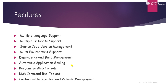Now we'll discuss the different features of OpenShift. The first feature is multi-language support as well as database support. It also supports source code version management and multi-environment support. Red Hat OpenShift enables any application created with it to run anywhere that Docker containers are supported. It also resolves dependency and build management, provides automatic application scaling, a responsive web console, a rich command-line toolset, and also continuous integration and release management.